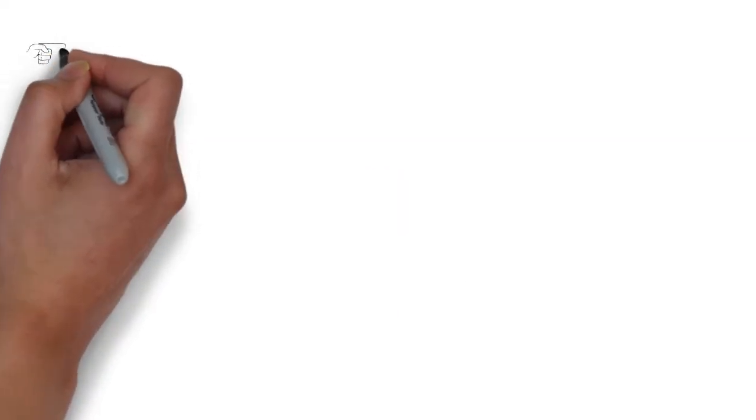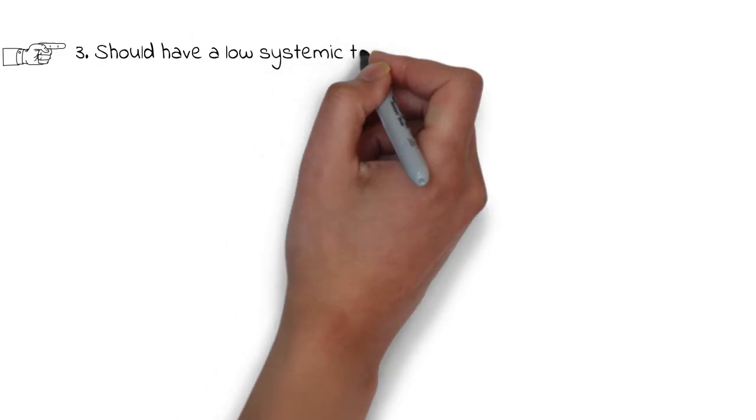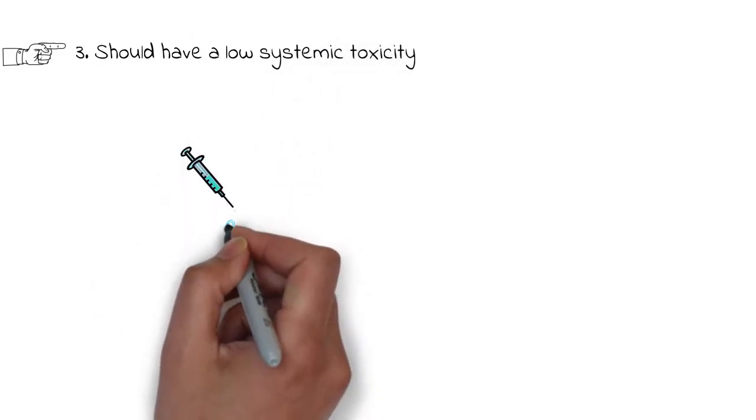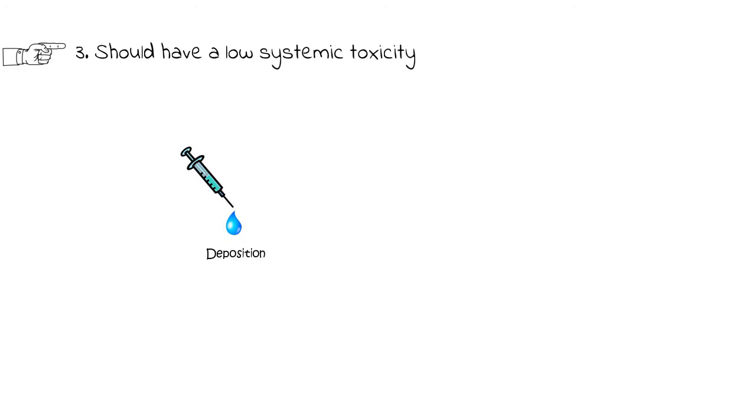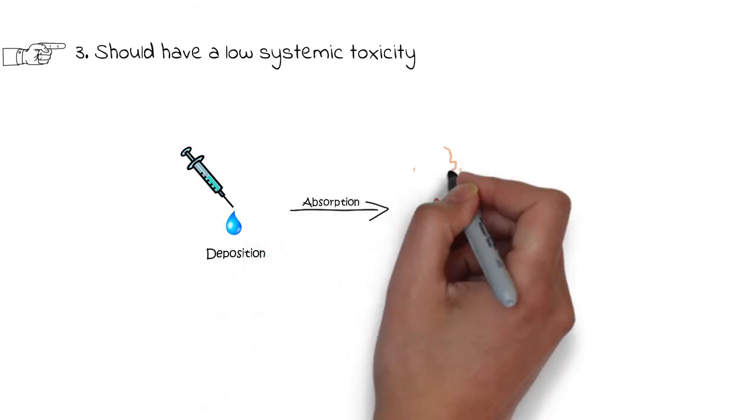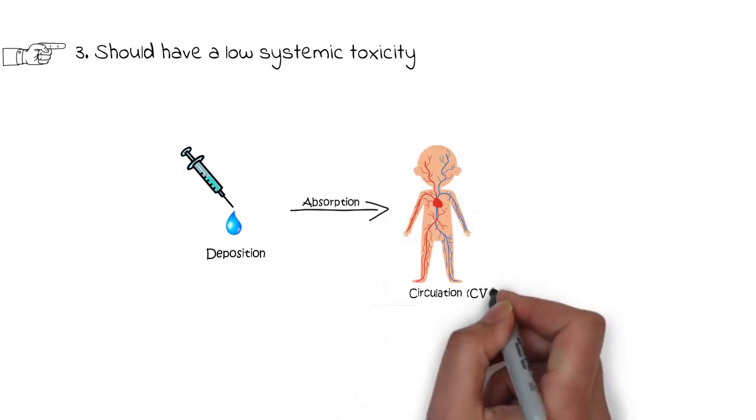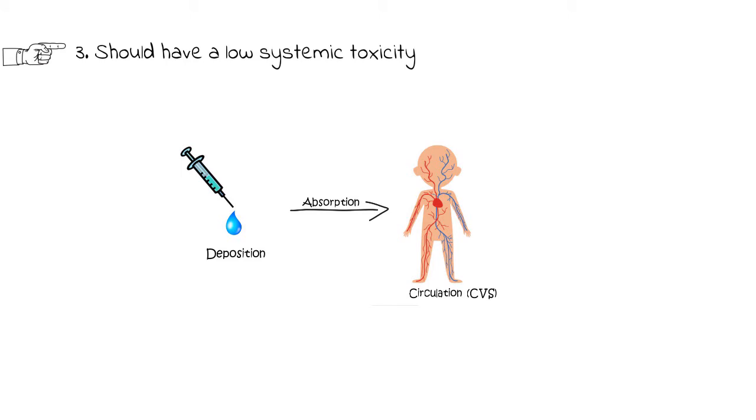The next point states that the agent must have low systemic toxicity. The reason systemic toxicity is so important is because once the anesthesia is injected into a specific site, it will eventually get absorbed from that site and end up in the bloodstream, which is part of the cardiovascular system. That is why potential toxicity is an important factor when making a selection of a local anesthetic agent or its solution.